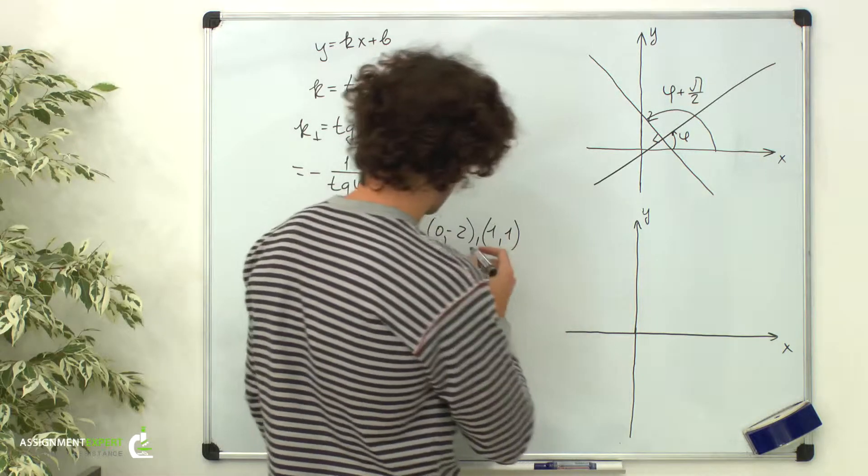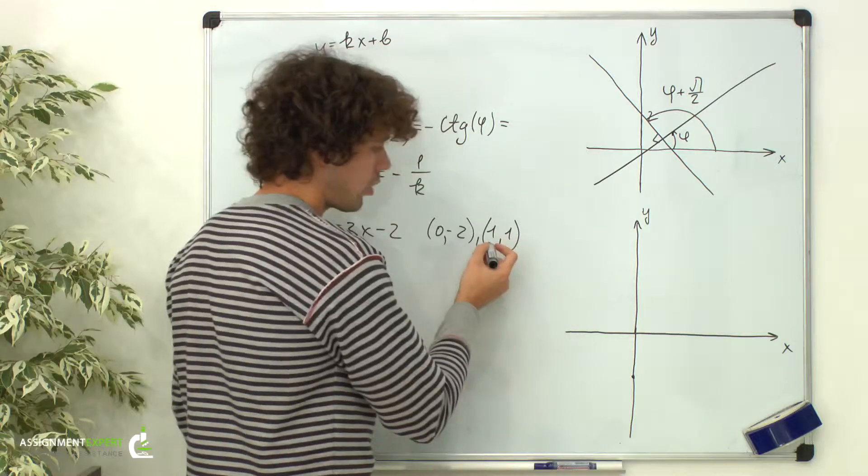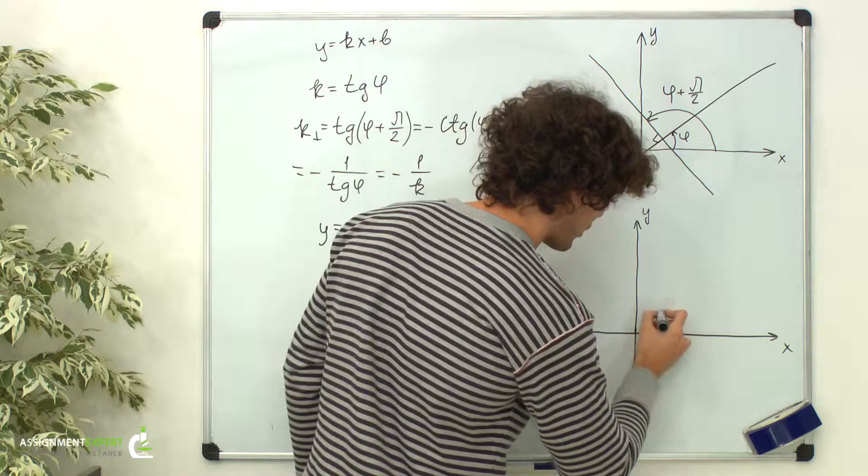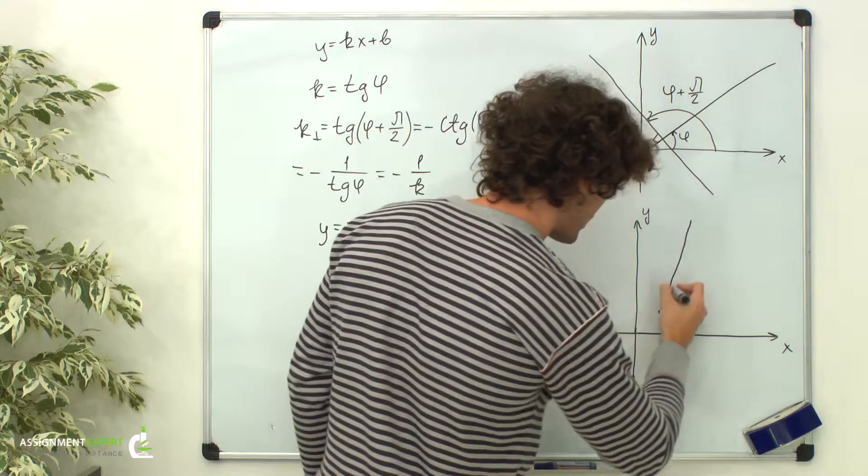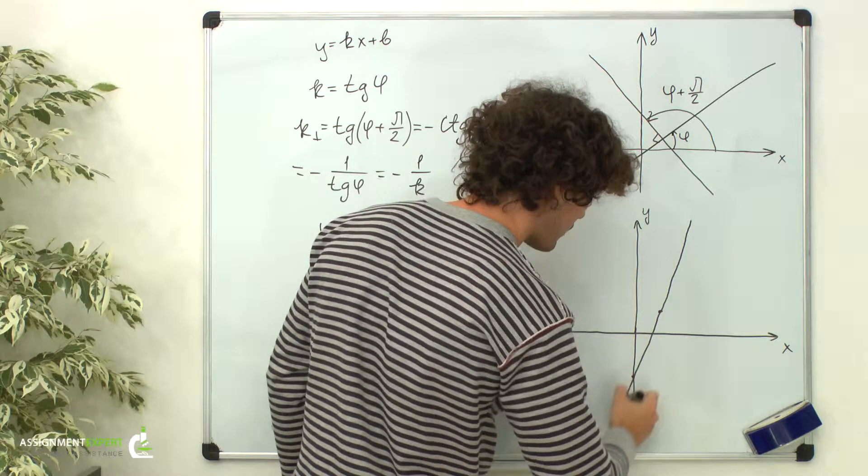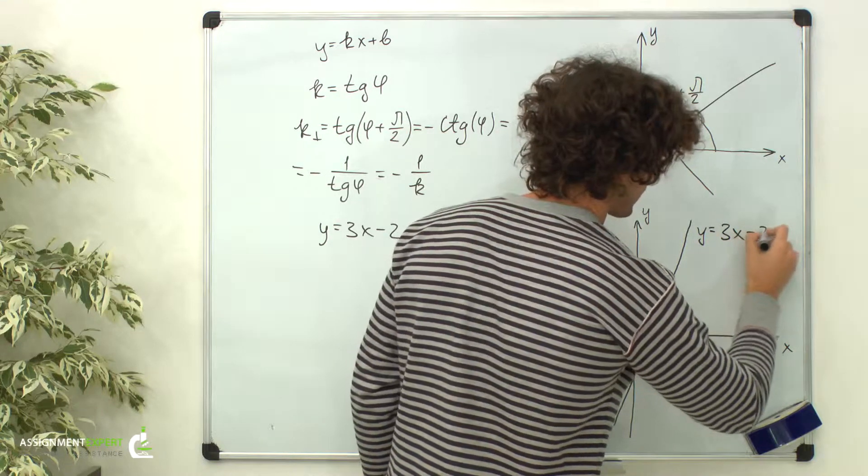The first point 0, negative 2 is over here, and the second 1, 1 is over here. And here goes our line, y equals 3x minus 2.